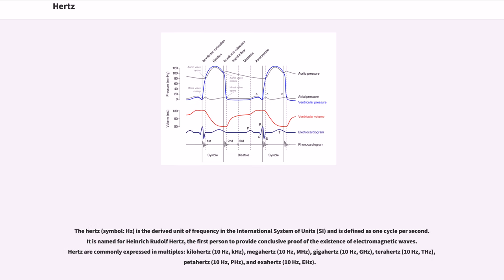The Hertz symbol, Hz, is the derived unit of frequency in the International System of Units (SI) and is defined as one cycle per second. It is named for Heinrich Rudolf Hertz, the first person to provide conclusive proof of the existence of electromagnetic waves.